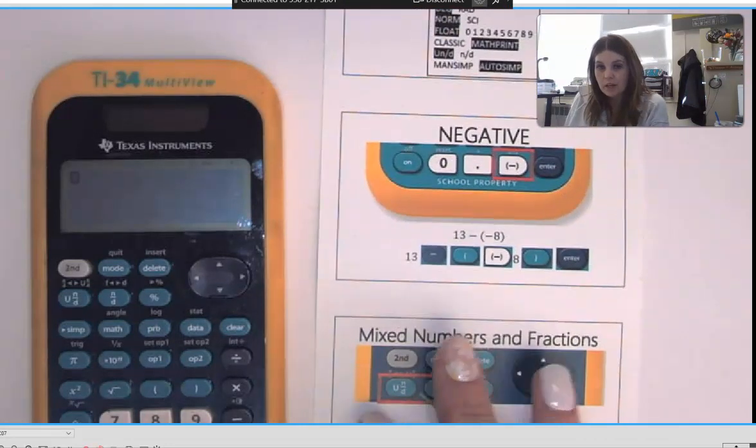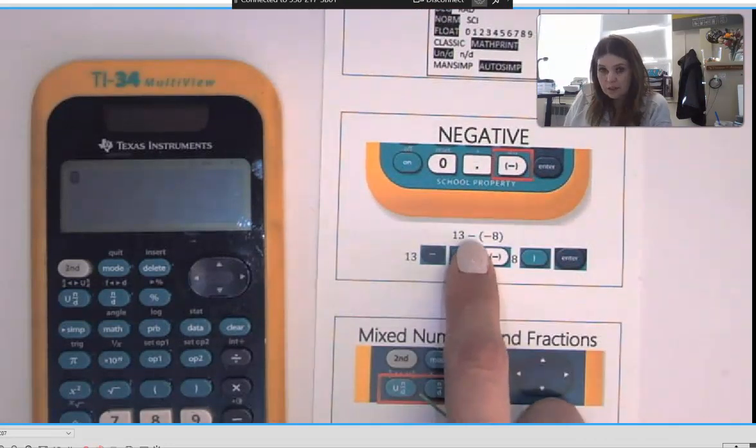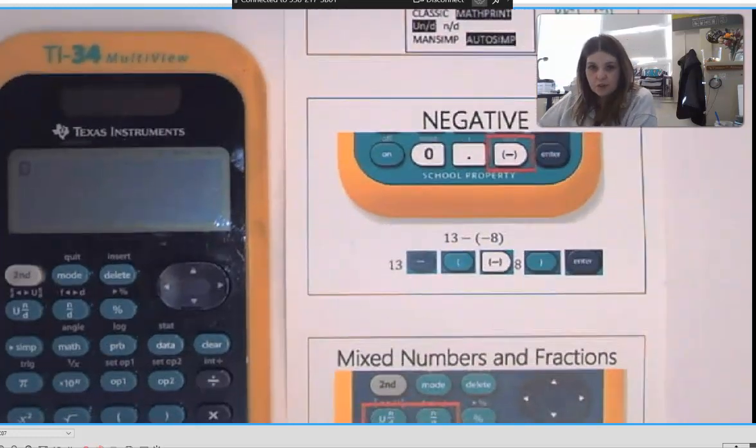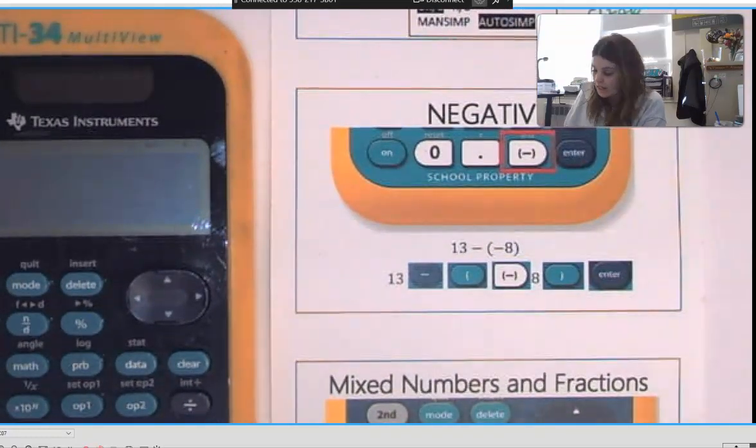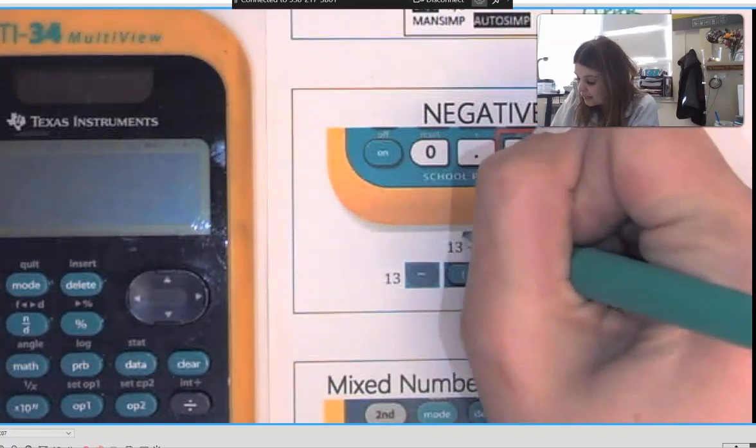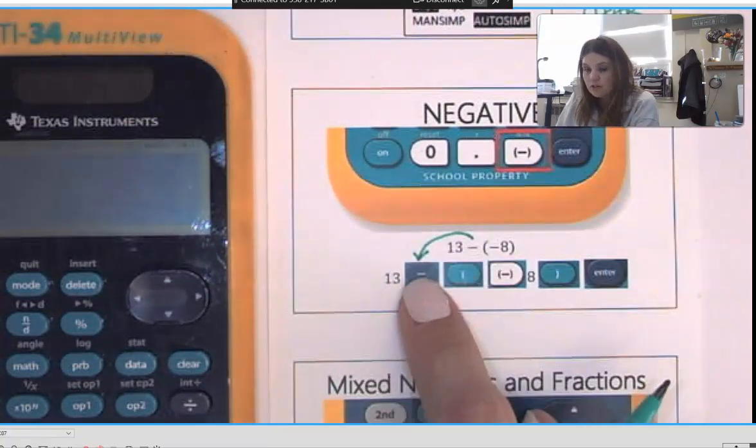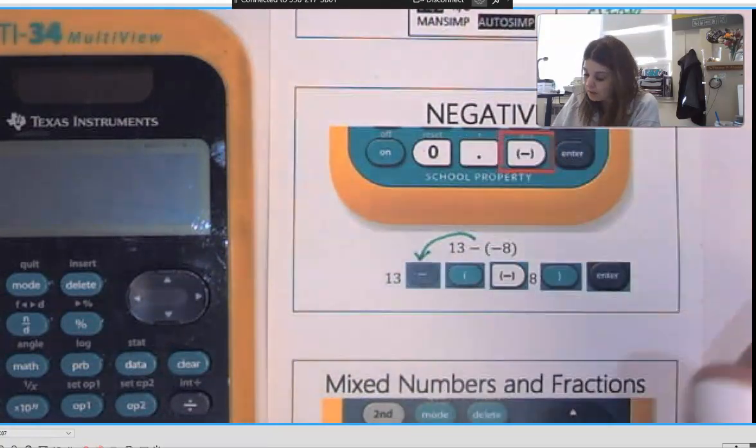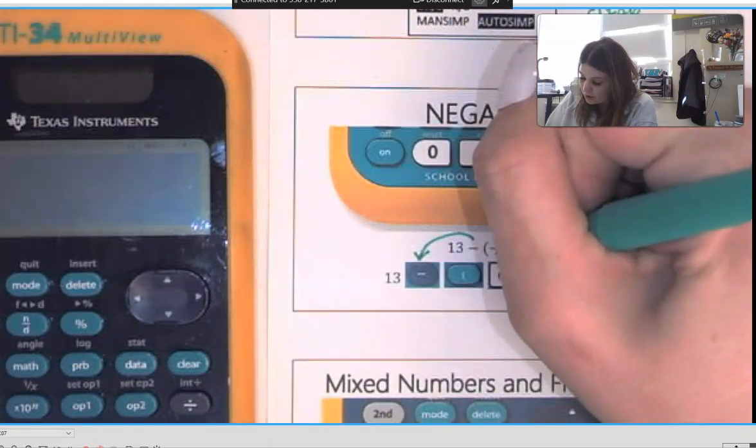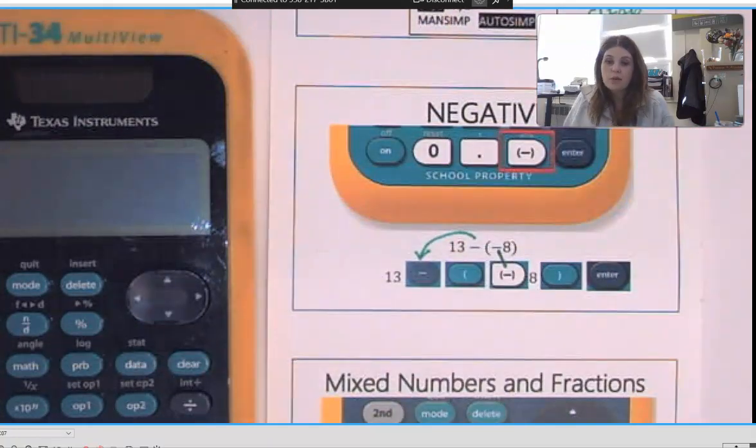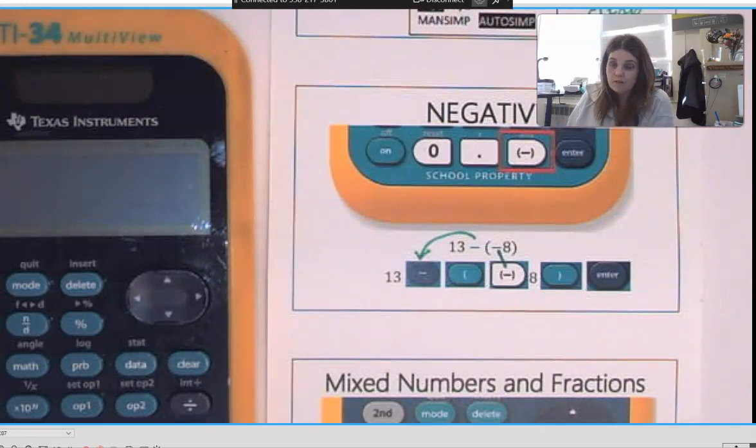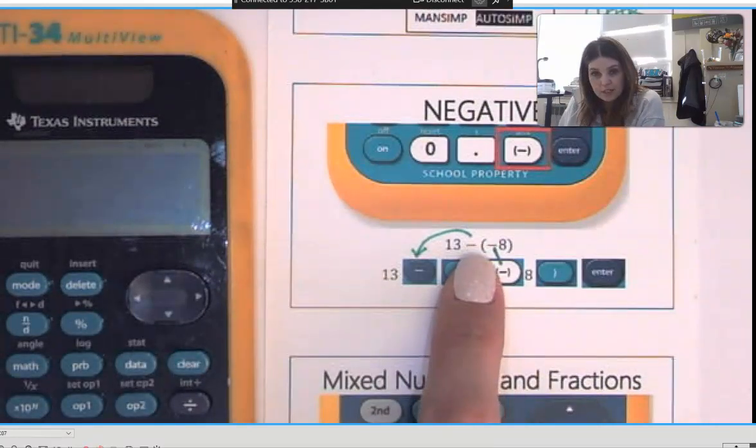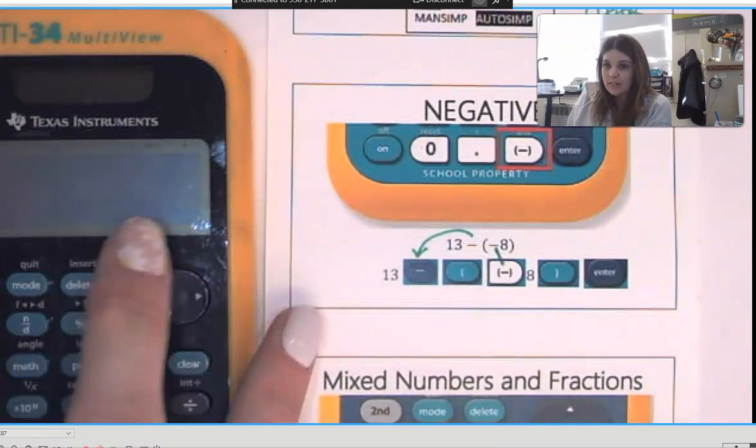So on your cheat sheet I have that right here that when you plug this in, this first one is a subtraction, so notice I give you that button to enter. This you have to hit your subtract button, but then this second one is a negative, so you have to make sure that you hit your negative button. So if I want to try to type in 13 subtract negative 8, I can type that in exactly like I see it on my screen.